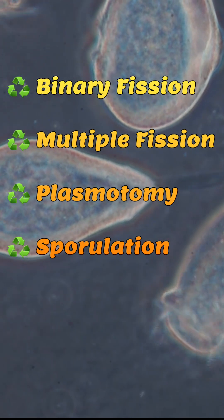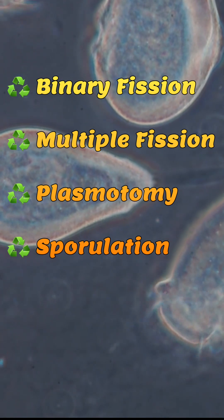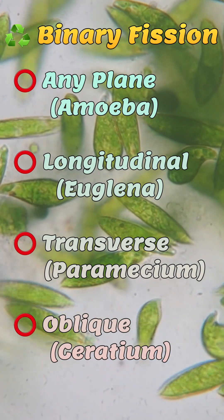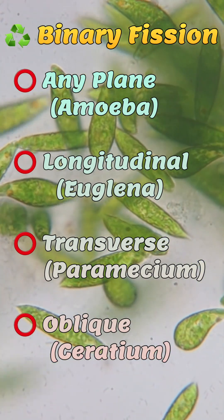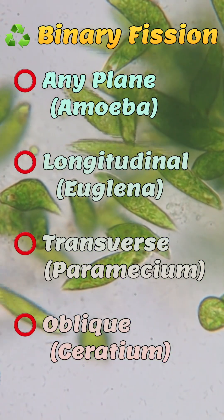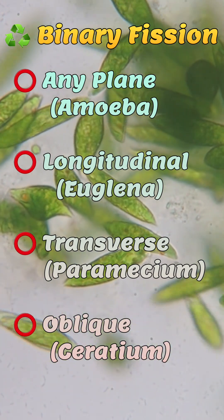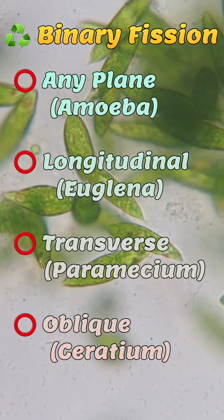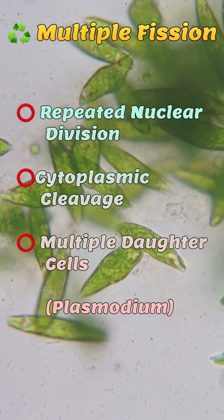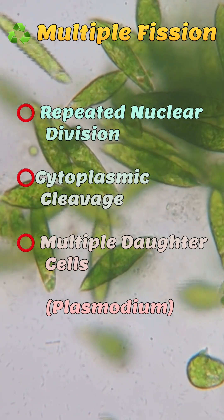Binary fission can occur in any plane in the case of amoeba. In euglena it is longitudinal, in paramecium it is transverse, and in ceratium it is oblique. In multiple fission, a parent produces a number of daughters due to repeated division of the nucleus and cytoplasmic cleavage.